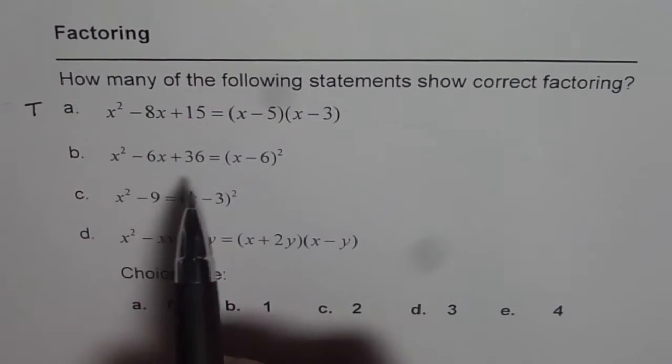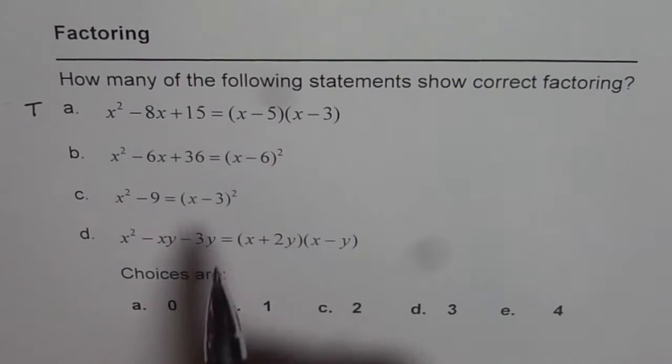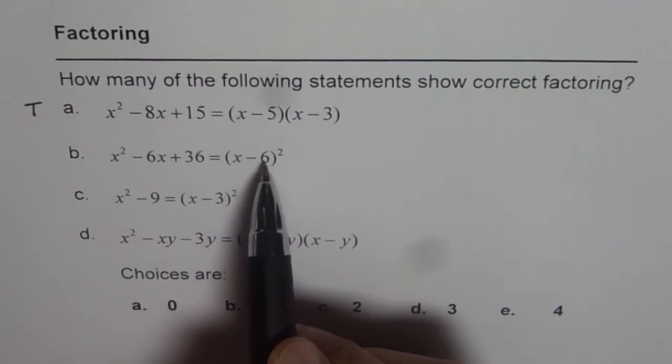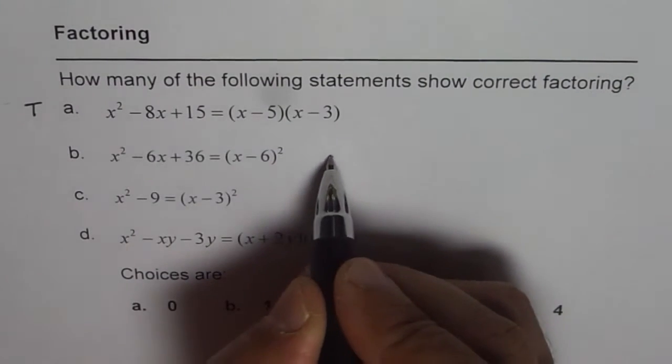The next one is x minus 6 whole square. You know a minus b whole square is a² - 2ab + b². You can expand this.